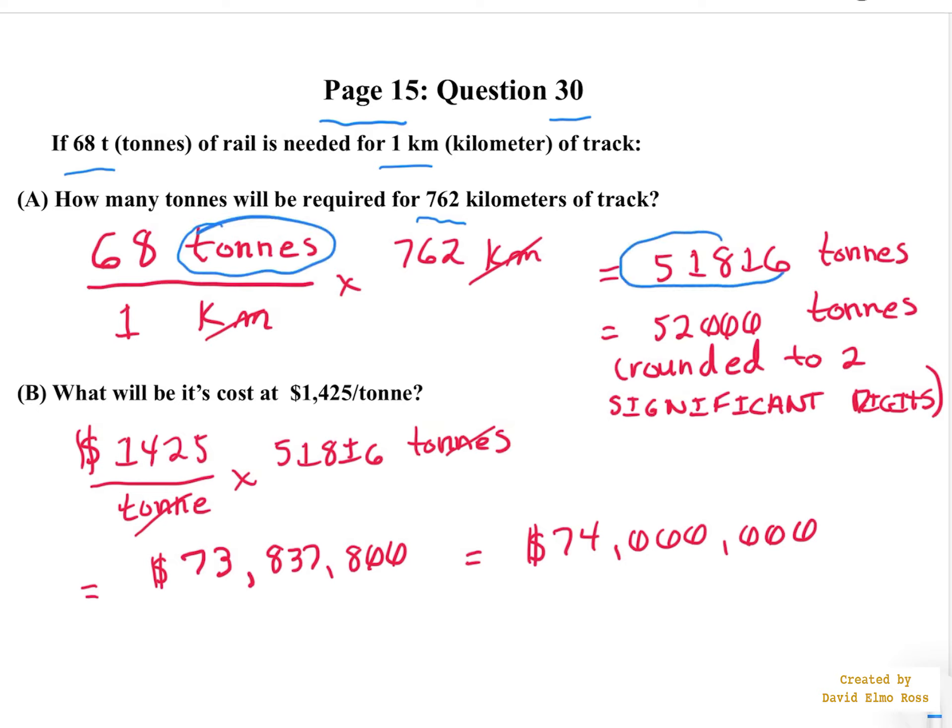And the number that you're going to get is this number in tons. However, 68 only has two significant digits, so our answer should only have two significant digits.